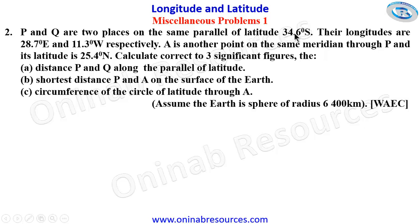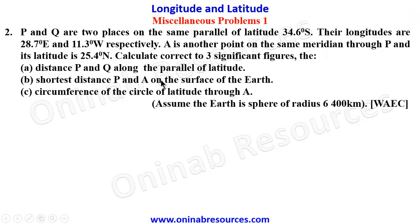We go to Problem 2. P and Q are two places on the same parallel of latitude 34.6 degrees south. Their longitudes are 28.7 degrees east and 11.3 degrees west respectively. A is another point on the same meridian through P and its latitude is 25.4 degrees north. Calculate to three significant figures: (a) the distance PQ along the parallel of latitude, (b) the shortest distance PA on the surface of the Earth, and (c) the circumference of the circle of latitude through P.